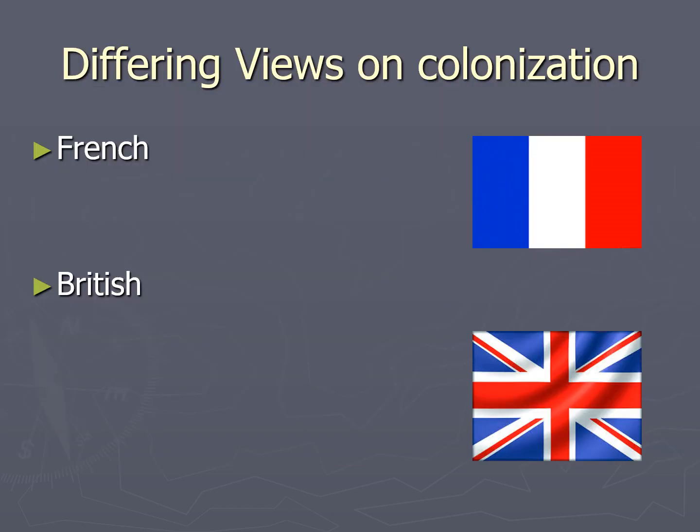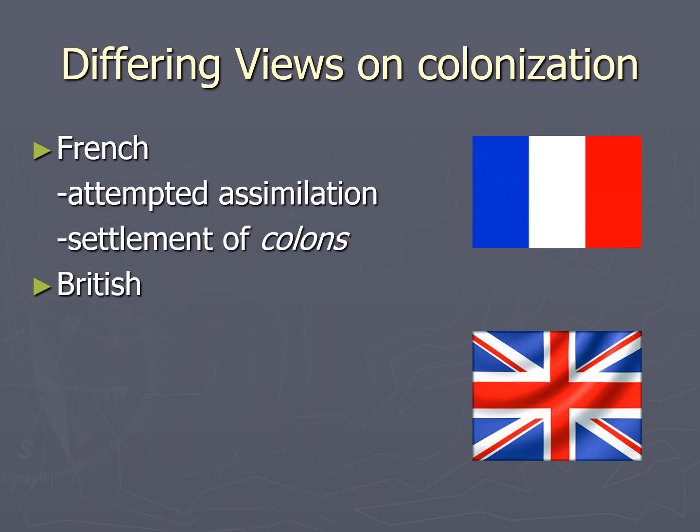Not all European countries ran their colonies the same way; therefore, the indigenous Africans' experience varied based on which European colony ruled them. The French viewed their colonies as an extension of France and wanted to replicate life there, attempting to assimilate indigenous Africans by forcing them to speak French only, wear Western clothing, and convert to Christianity. They also had settlers, or colons — people from France who moved there and often enjoyed much better lives than they would have had they stayed in France, having all of the best land and benefiting from much of the technology brought to Africa.